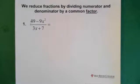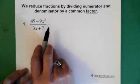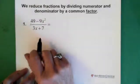So we reduce, and in this case we're reducing the fractions by dividing the numerator and the denominator by a common factor. When you see something like this, the first thing you do, if you can, is factor.